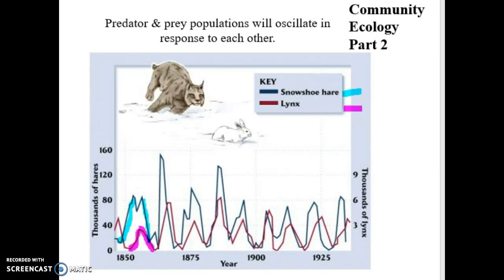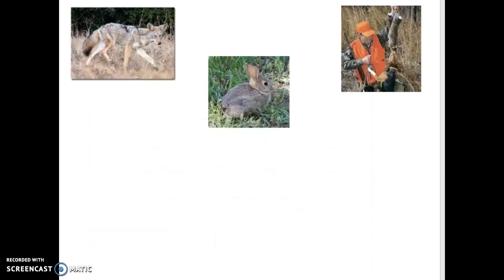We were going through the snowshoe hare and the lynx data last time. Now let's jump to the next slide with a more Illinois-based example: coyotes and rabbits. We have them all over the place. Coyotes like to eat rabbits — that's one of their food sources. So you have a direct predator-prey relationship going between a coyote and a rabbit.